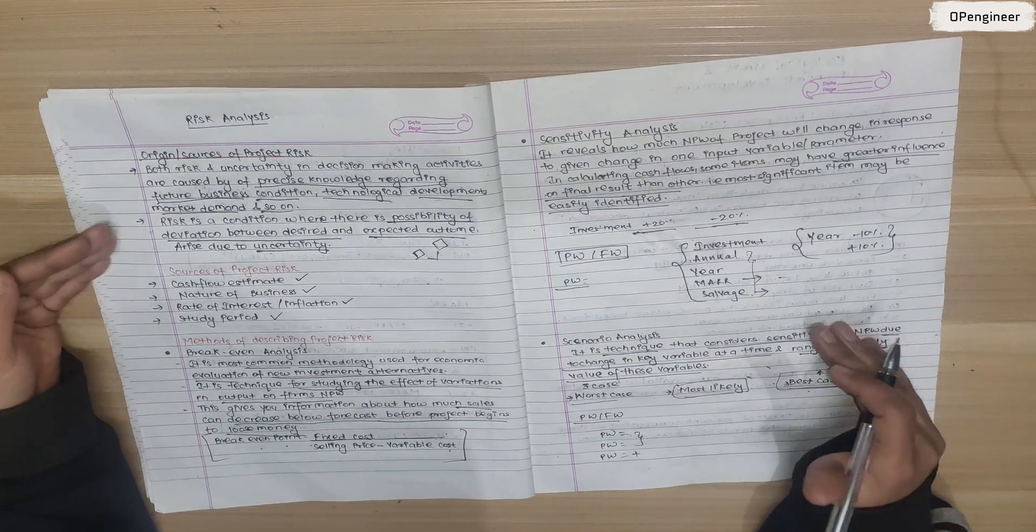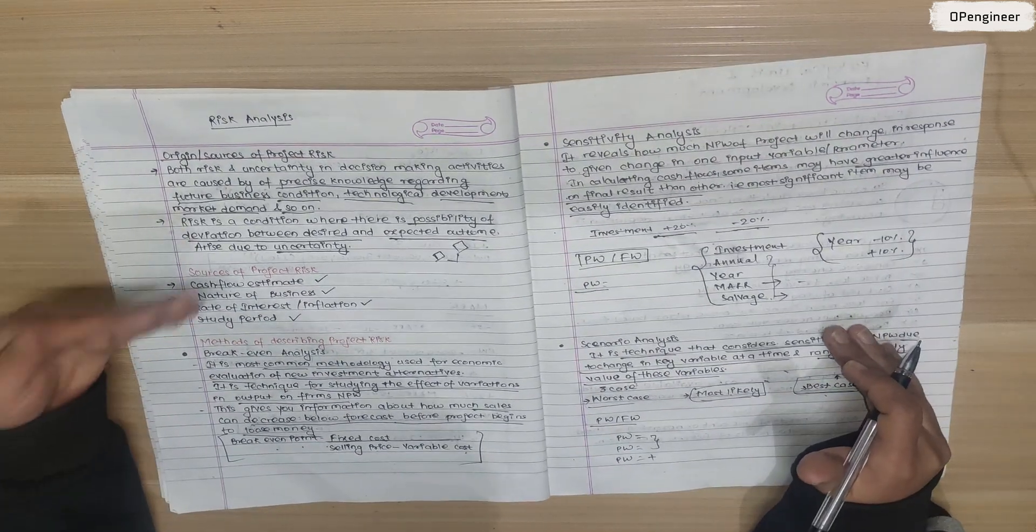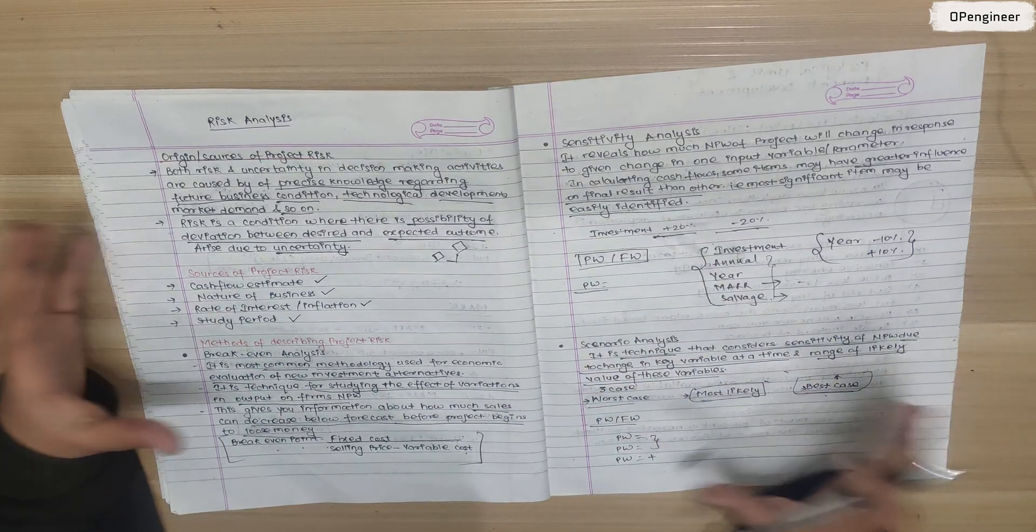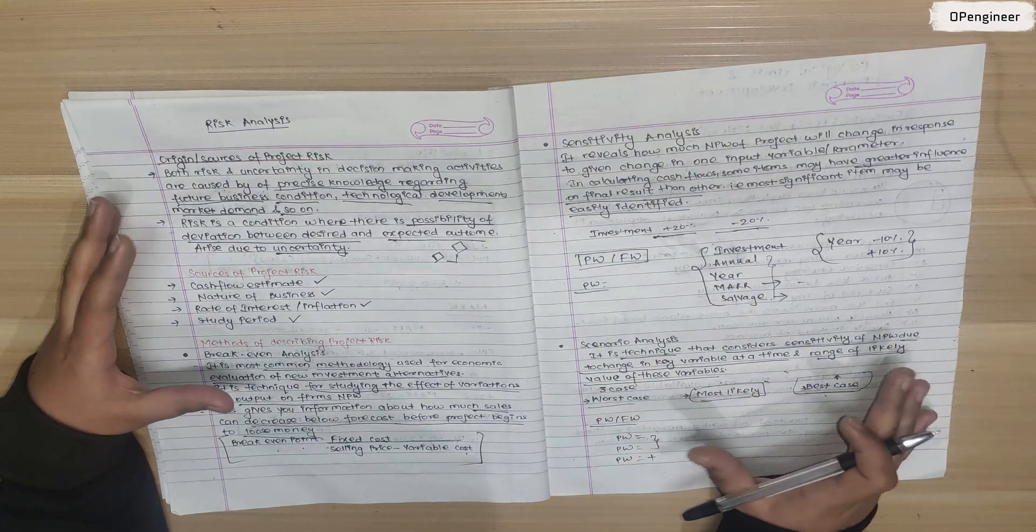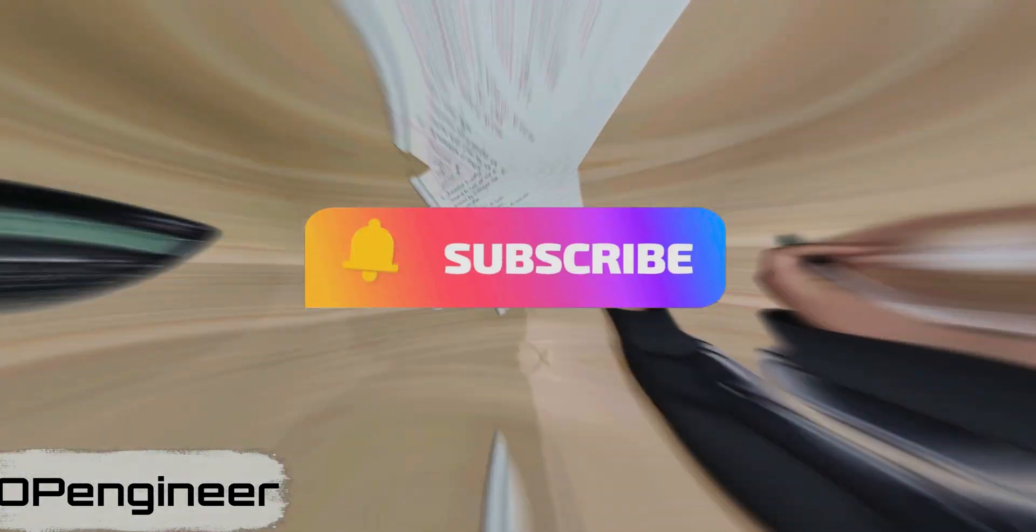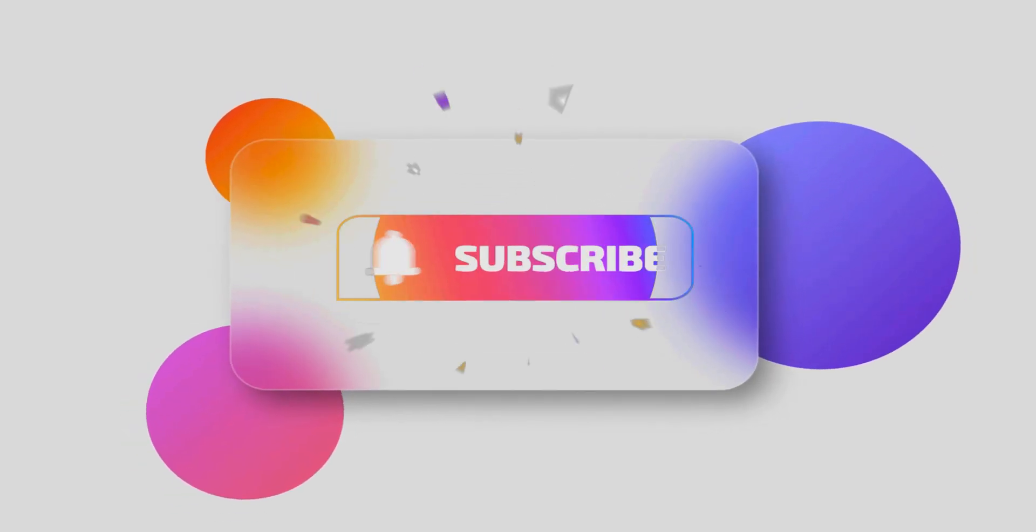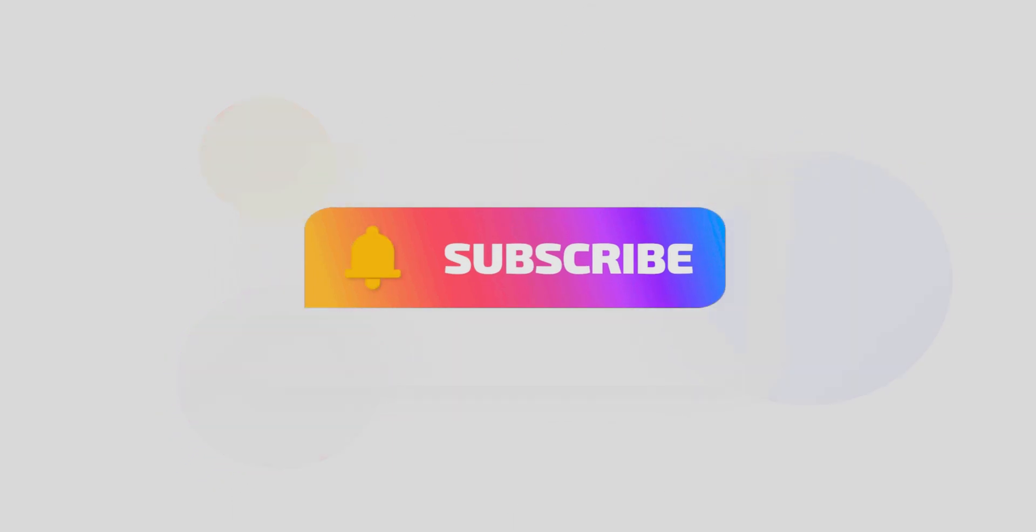So the main topics of risk analysis are: what is risk, its sources, and methods. We can understand this chapter well. So that's it. If there's any confusion, please comment. Like the channel, subscribe, and share. Thank you.